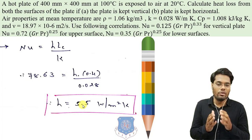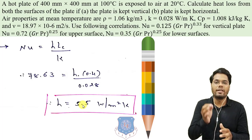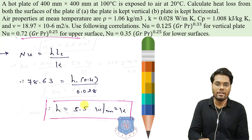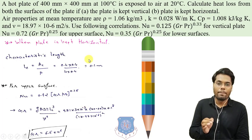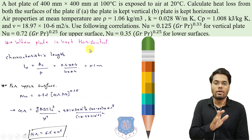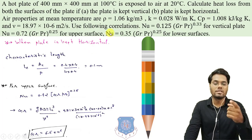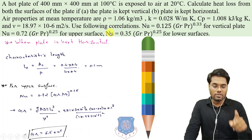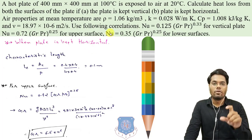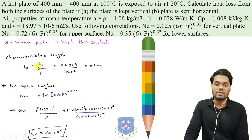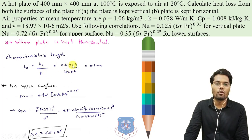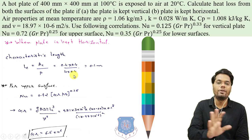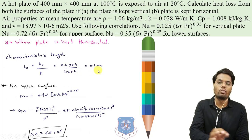Now we have the value of H, so we can calculate the heat transfer rate using Q = H·A·ΔT. When the plate is kept horizontal, the characteristic length is the cross-sectional area divided by perimeter: (0.4 × 0.4) / (4 × 0.4) = 0.1 m.